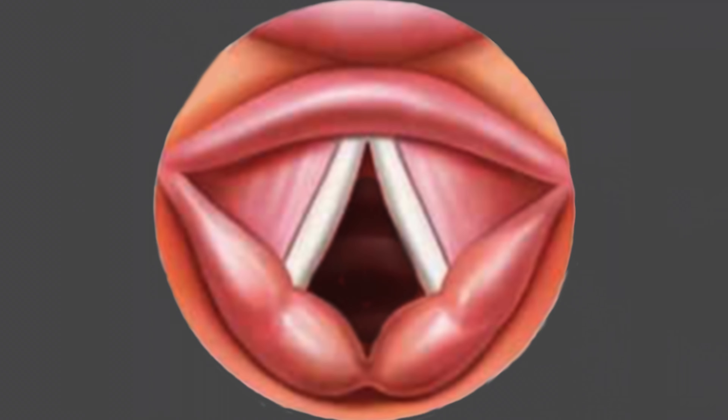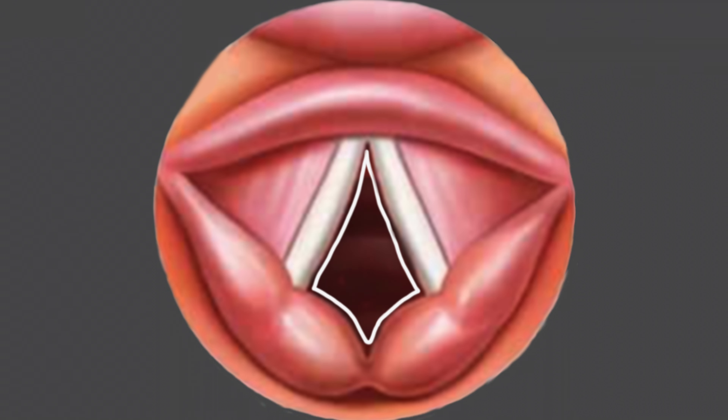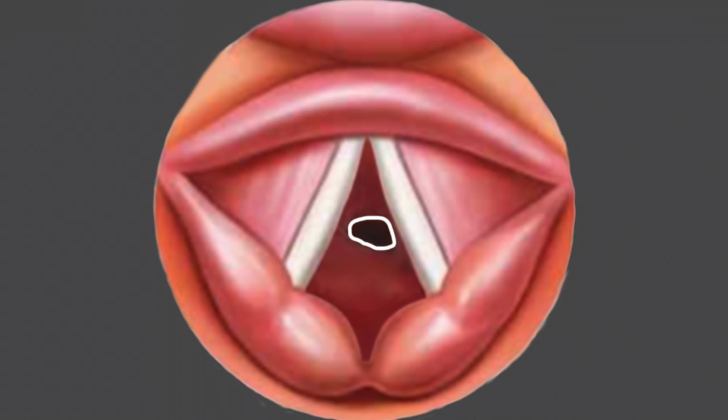Here is what normal should look like. Note how large the airway opening is. Now take a look at how narrow the airway is with a subglottic stenosis.